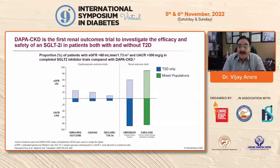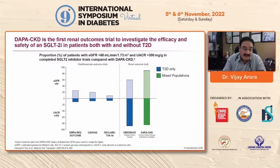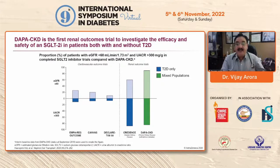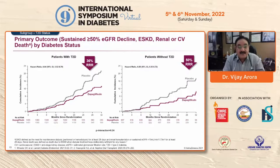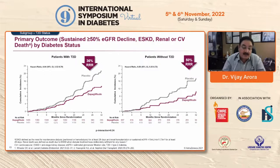Looking at renal outcome trials with CREDENCE and DAPA-CKD, both including type 2 diabetic and mixed populations with eGFR <60 and UACR >300, and with around 4,300 patients in DAPA-CKD and 6,600 in the EMPA-Kidney trial. On the primary outcome — sustained >50% eGFR decline, end-stage renal disease, or renal/CV death by diabetes status — the relative risk reduction is 36% with dapagliflozin in type 2 diabetic patients, whereas in patients without type 2 diabetes it is 50%, much more marked. This highlights the role of dapagliflozin in CKD without type 2 diabetes.